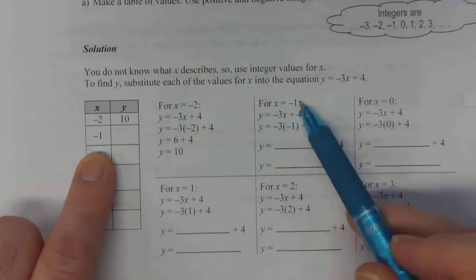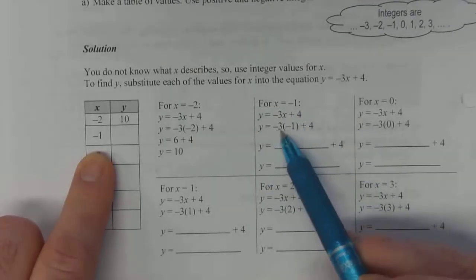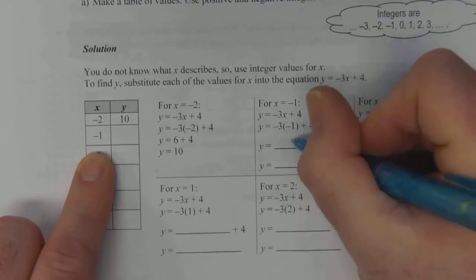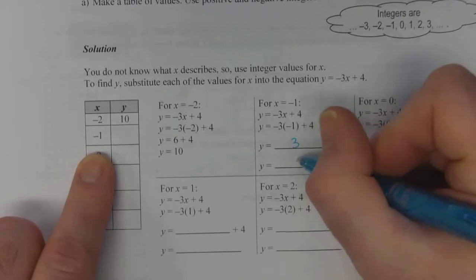Negative 1. We substitute in our negative 1 for x, and we do the same thing all over again. Negative 3 times negative 1 is positive 3. And then we're going to add 4 to that. So we get 7.